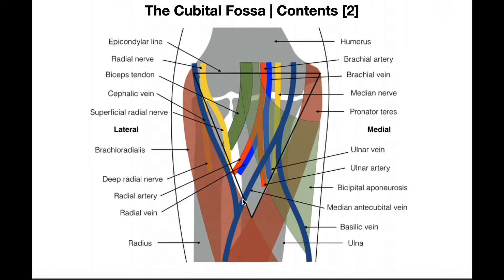The median cubital vein — also called the median antecubital vein — connects the cephalic system laterally to the basilic system medially. This particular vein has the most genetic variation of all of them. But in any individual that has it, it connects the basilic system medially to the cephalic system laterally, and you can clearly see it coursing through the cubital fossa.